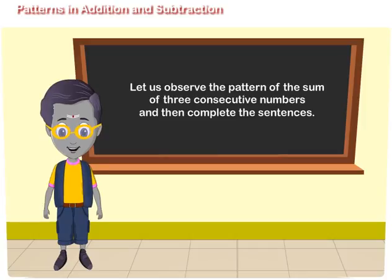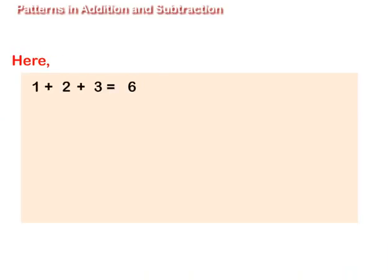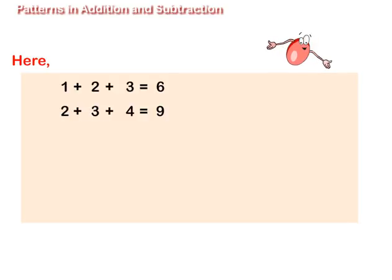Let us observe the pattern of the sum of three consecutive numbers and then complete the sentences. Here, 1 plus 2 plus 3 is equal to 6. 2 plus 3 plus 4 is equal to 9. 3 plus 4 plus 5 is equal to 12.